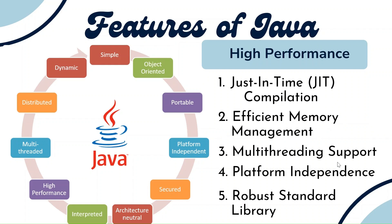As a platform independent language, you can run programs on any operating system and get the same result. Java also has a robust standard library with lots of packages. If you want to go for networking, input/output, applets, Swing, internet applications, GUIs, or native code generation using JNI packages — there is a huge range of standard libraries available so you can develop any type of application.